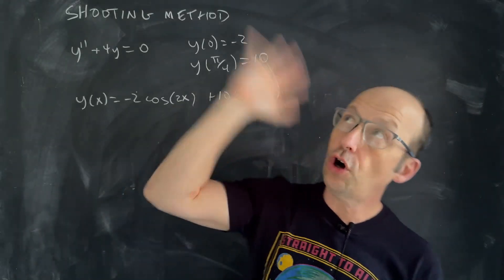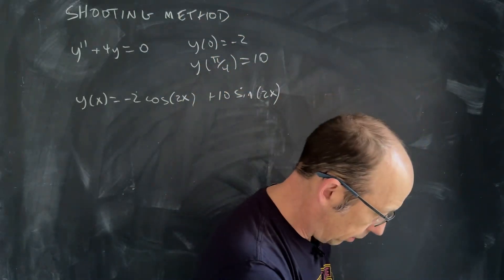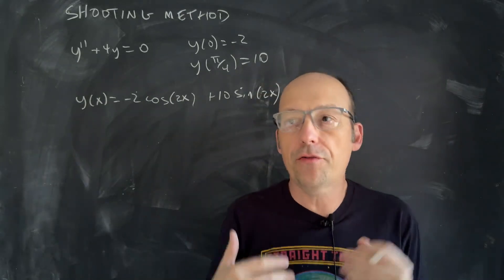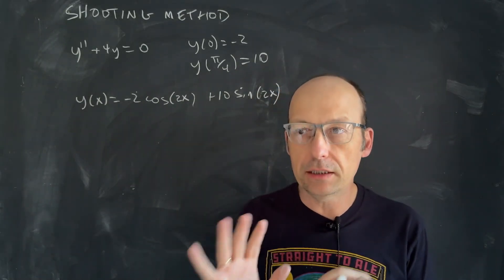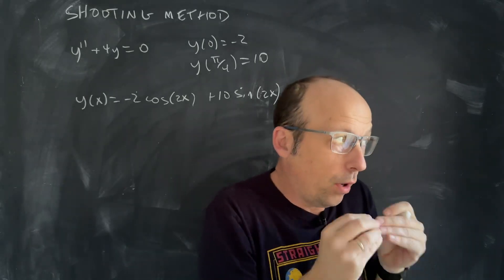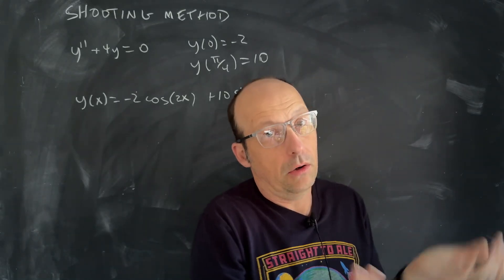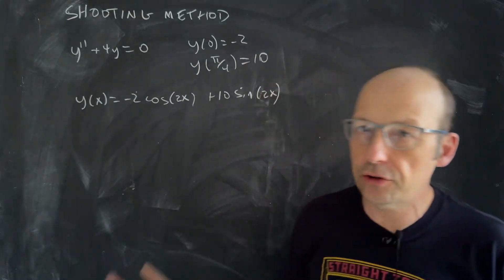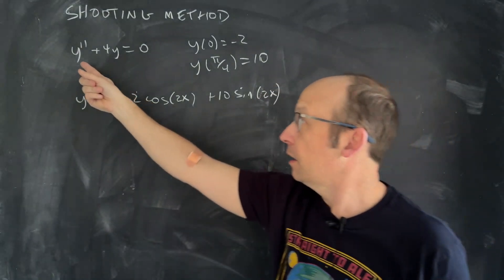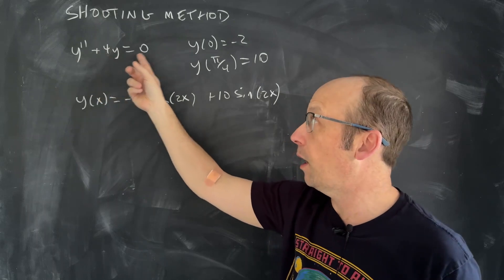In mathematical methods of physics, we're solving differential equations and boundary value problems. I want to go over different methods of solving these. We've done this analytically, but I want to solve it with the shooting method. I just picked a differential equation with boundary values — here's my differential equation: y double prime plus 4y is equal to 0.